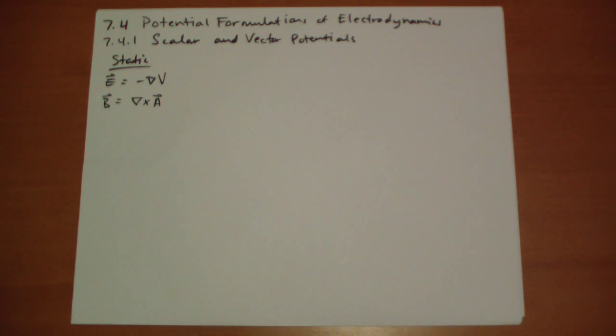And the reason why these worked is because the E vector had a curl of 0, and the B vector had a divergence of 0. So the Helmholtz theorem says that you can express these as the gradient of some scalar field and as the curl of some vector field.